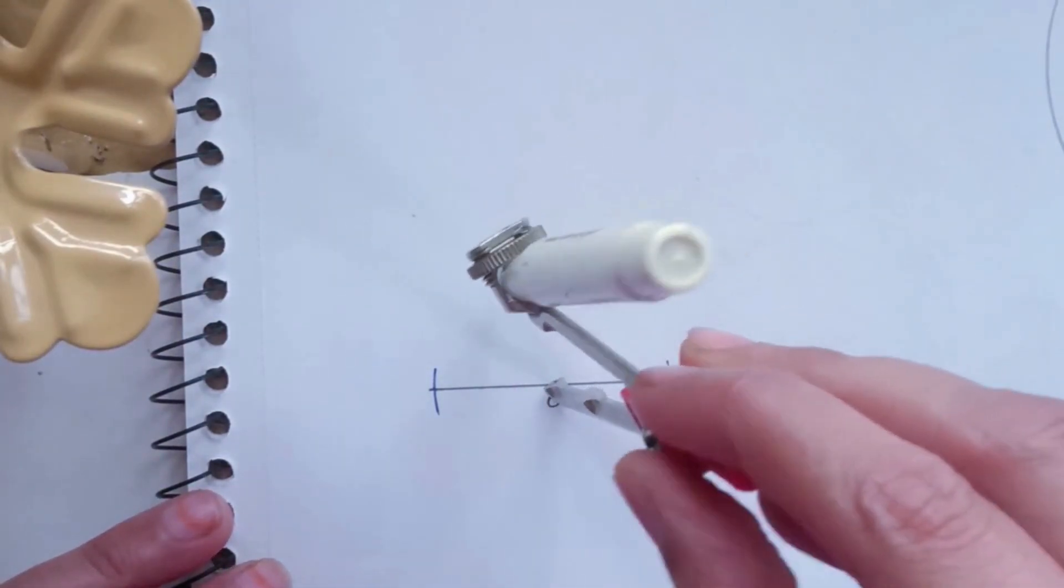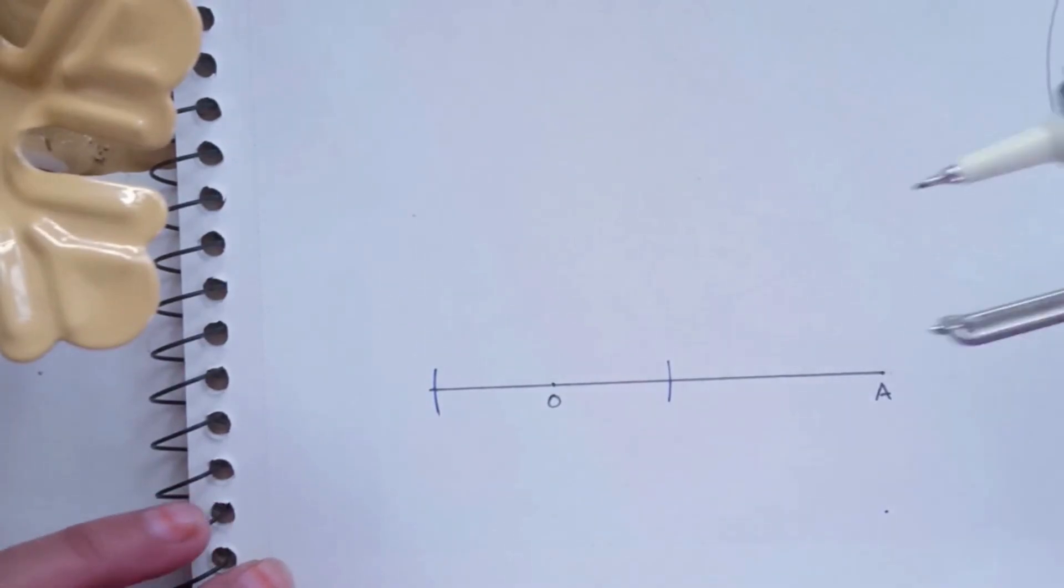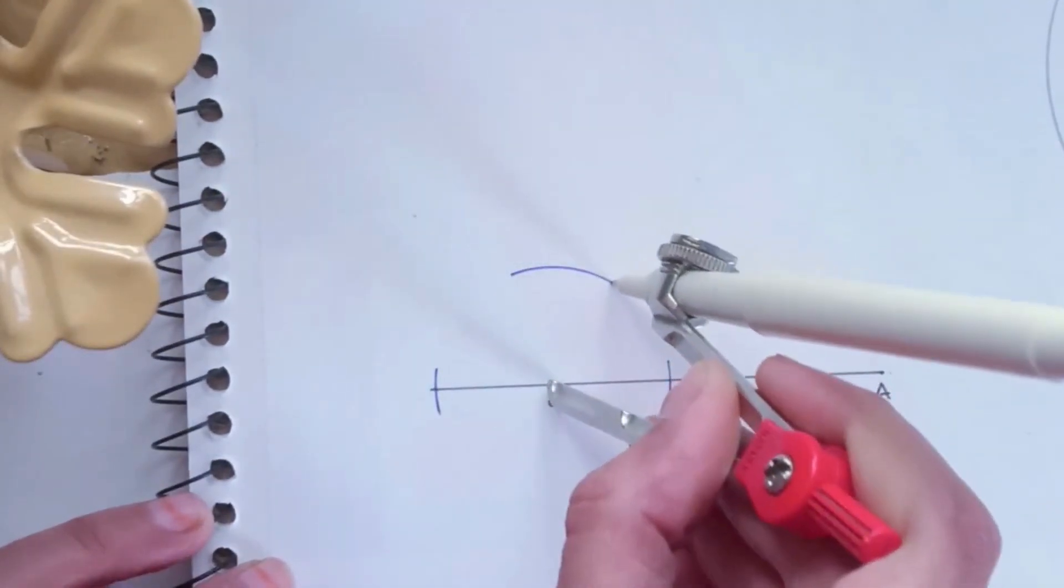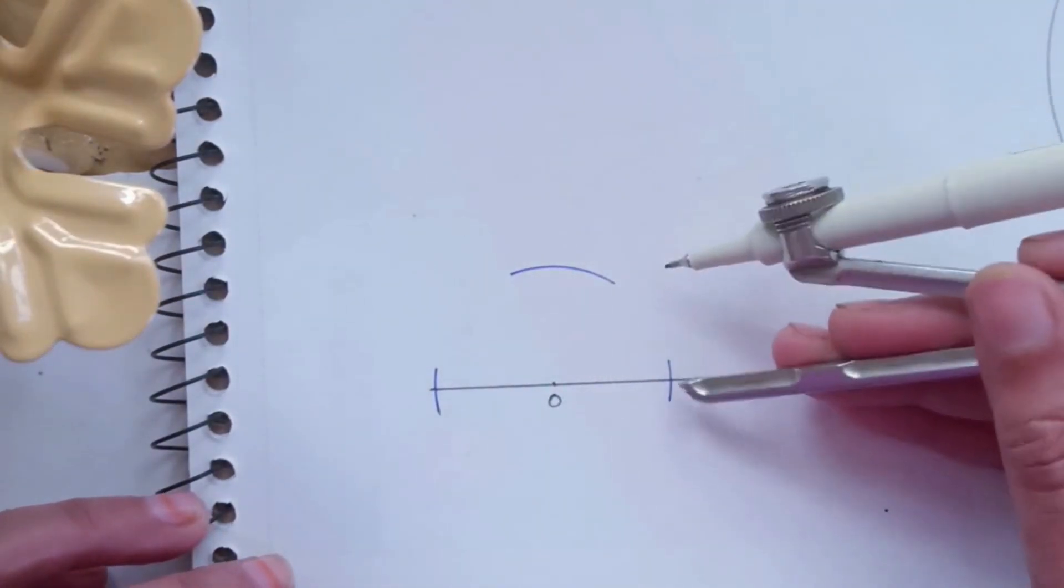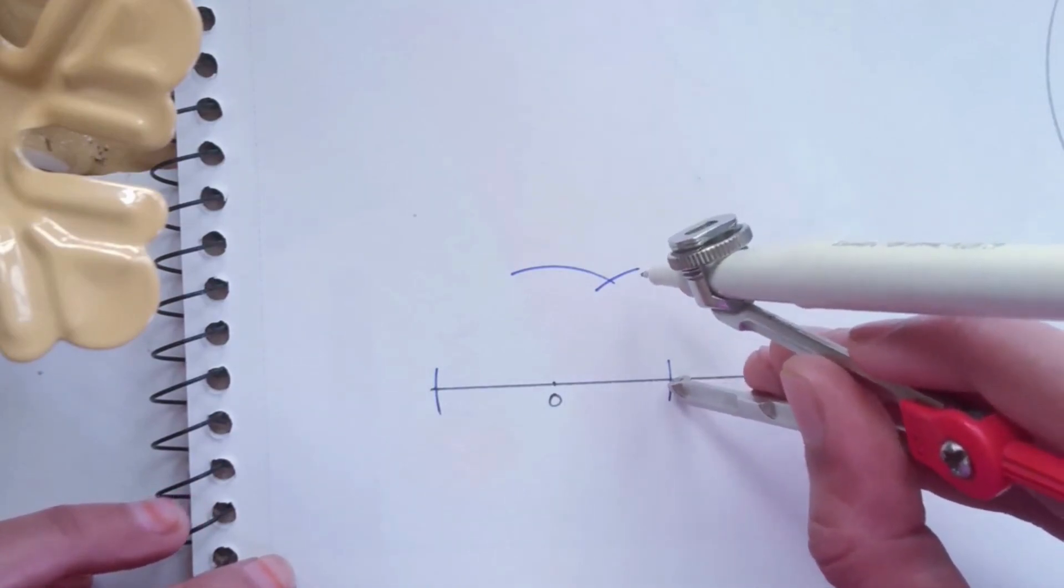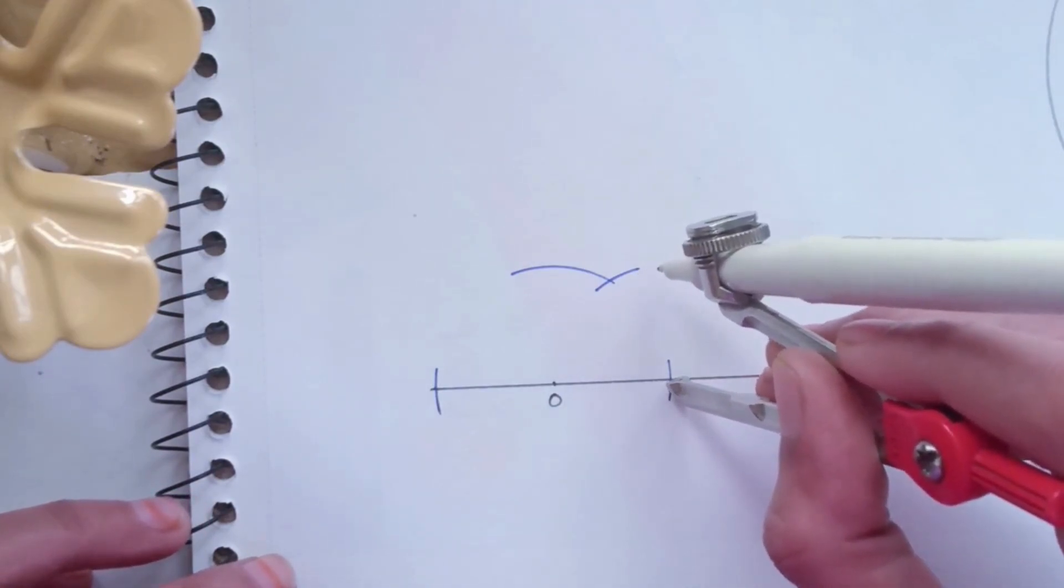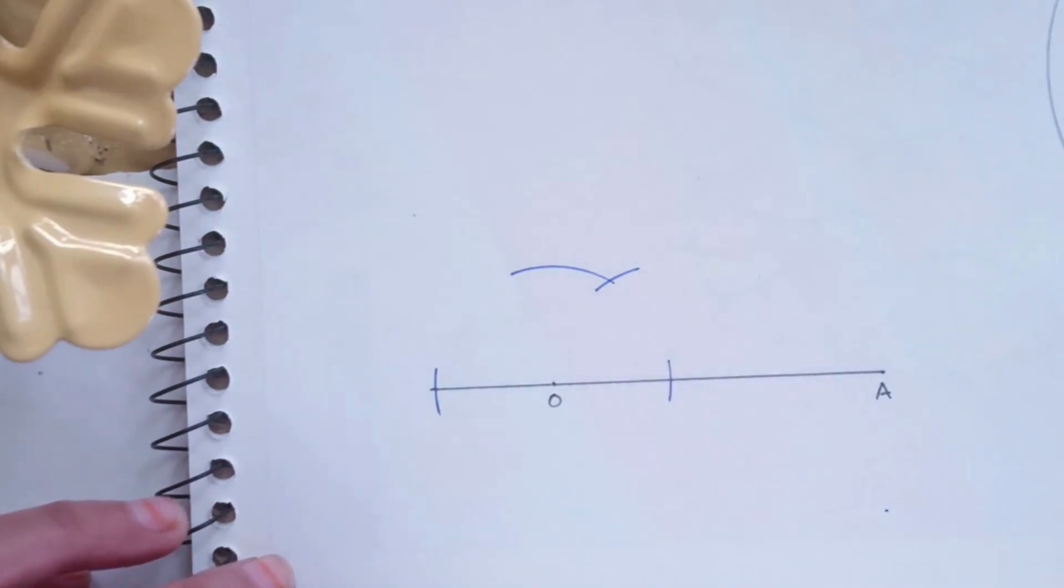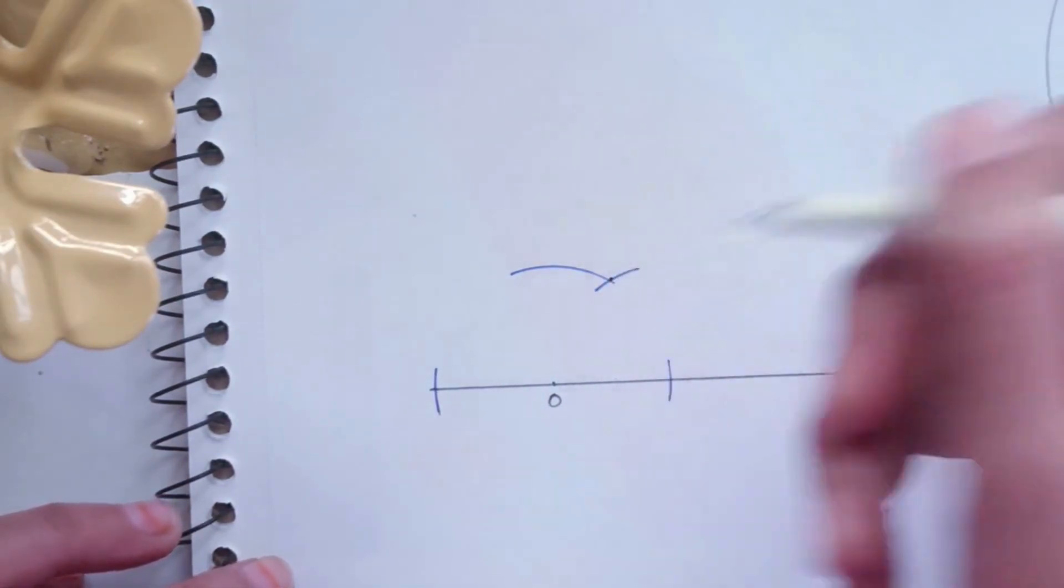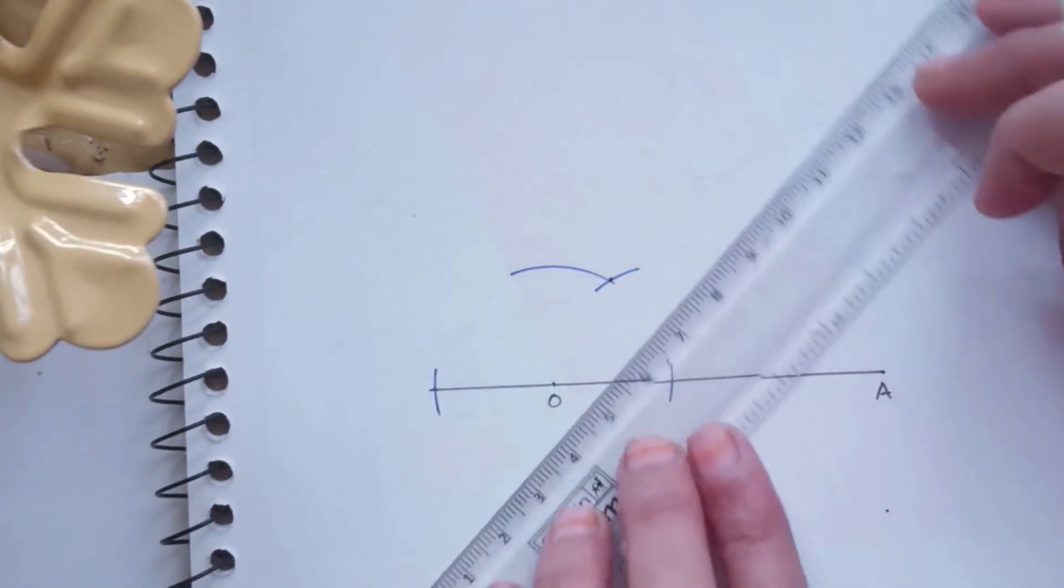Now with the same distance, draw one more arc which will be vertical to O and intersect this arc from the right hand side point. So we get this intersecting point.